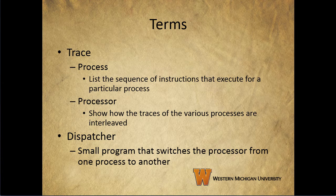First, let's take a look at a couple of terms and be clear about how we're going to use them. A trace, in general, will list a sequence of instructions. For processes, it will simply be the list of instructions that execute for that particular process. For processors, the trace will show how the traces of the various processes are interleaved. We'll see examples of these in just a few slides.